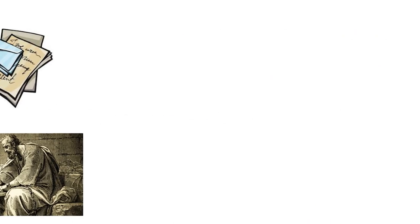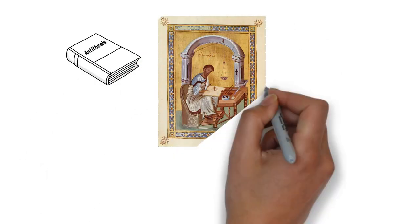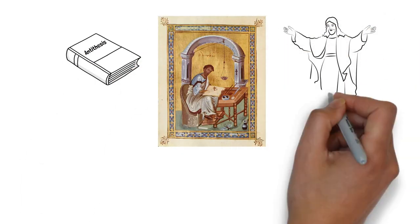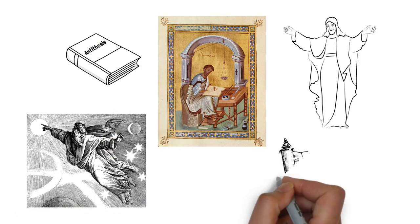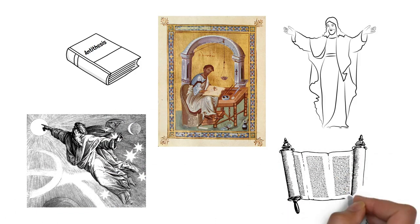In the book, Marcion contrasted and compared our Christian God, as revealed to us only through Christ, with the Hebrew deity portrayed in the Jewish Torah, or what you know today as the Old Testament.